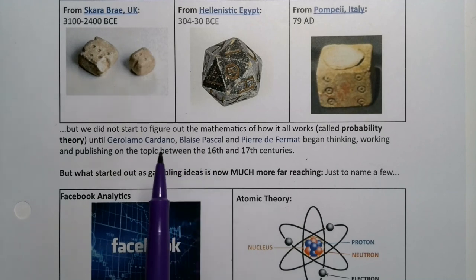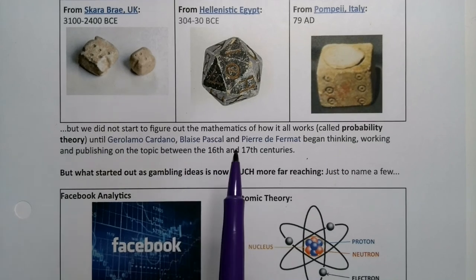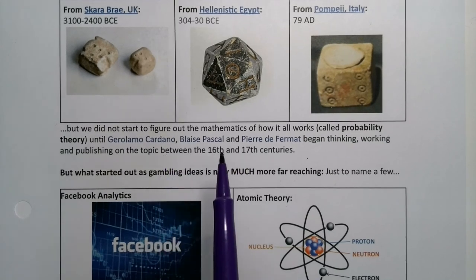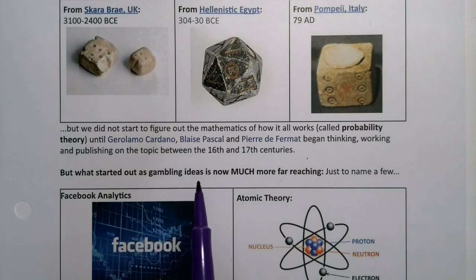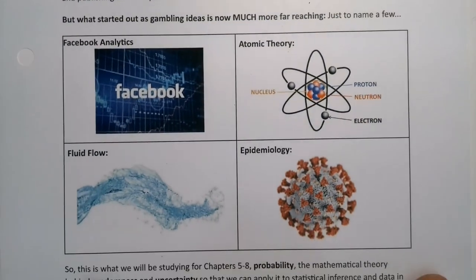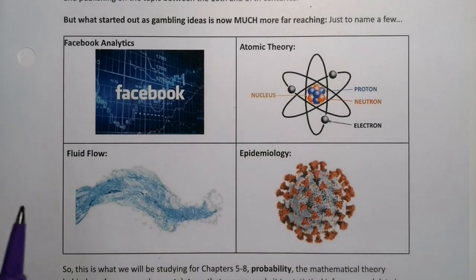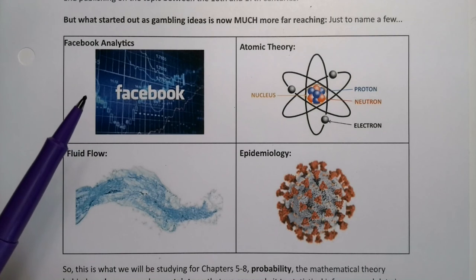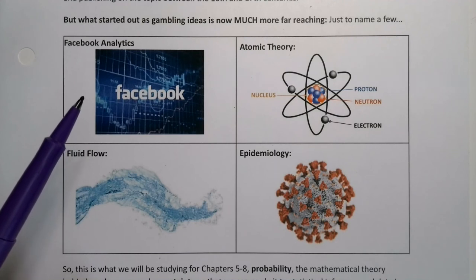Where they began — Cardano in particular — they wanted to learn the gambling games and know the math of gambling so they could win. But what started out as gambling ideas is now much more far-reaching than that. Probability is everywhere. Facebook analytics, Google, and all major tech companies are constantly analyzing you and figuring out the chances of you doing this, that, or the other online. All of that is done with probability theory.